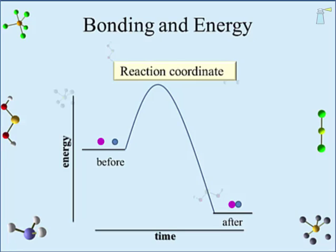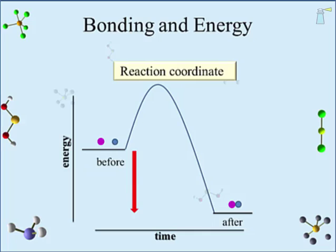We'll stick with the before and after terms for now, though the real terms are reactants for the material before the reaction and products for the material present after the reaction. As we can see from the diagram, going from before to after there is a release of energy — going from a higher to a lower value on the y-axis. The bonded atoms in the after platform do not have this difference in energy, and it is released. We need only be aware that it is not in the bonded atoms.